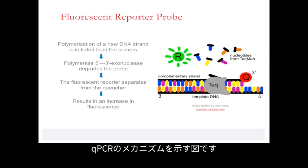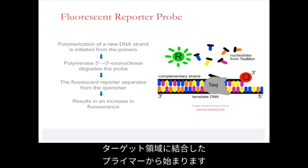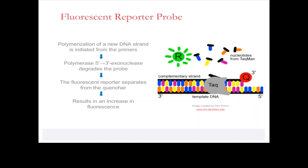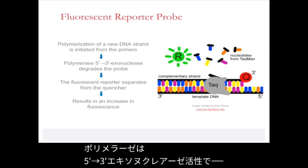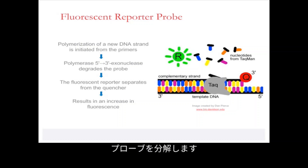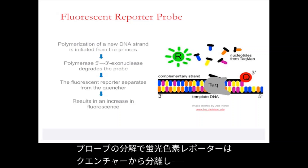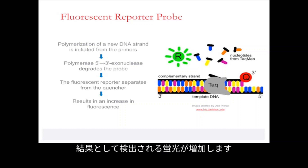The schematic diagram here shows how qPCR works. Polymerization of a new DNA strand is initiated from the primers binding to the target region. The polymerase has 5' to 3' exonuclease activity and it degrades the probe. Upon probe degradation, the fluorescent reporter separates from the quencher, resulting in an increase of fluorescence which is detected.